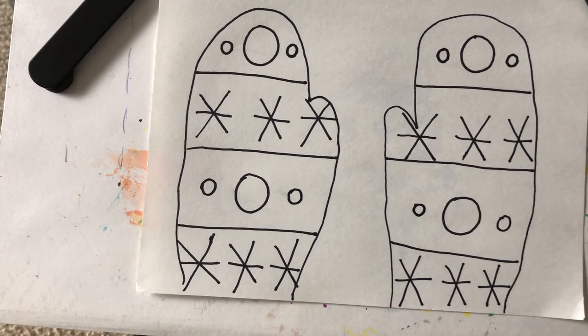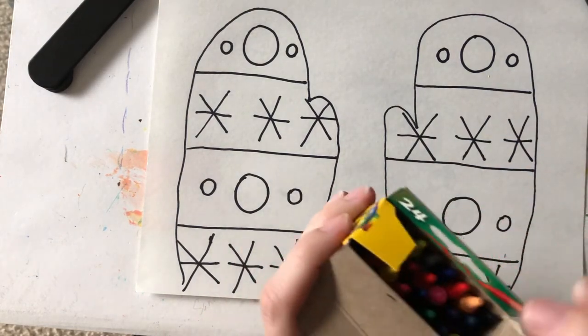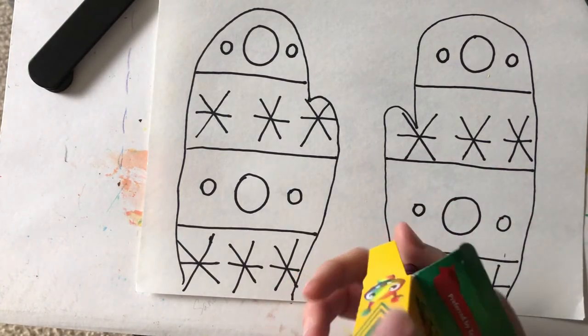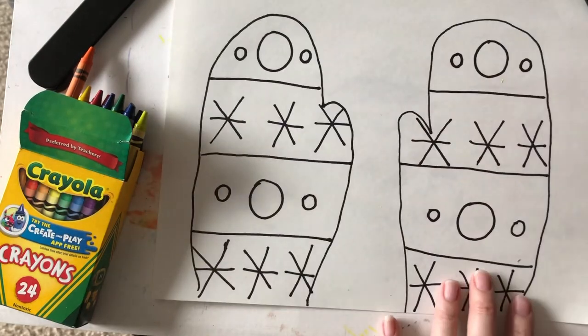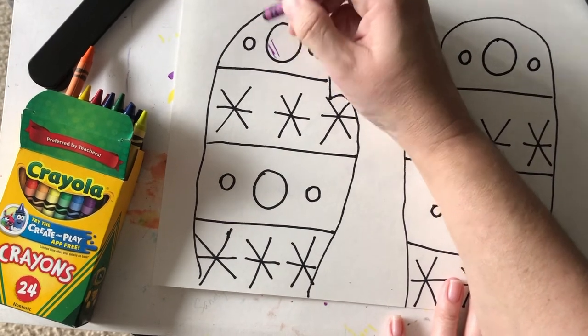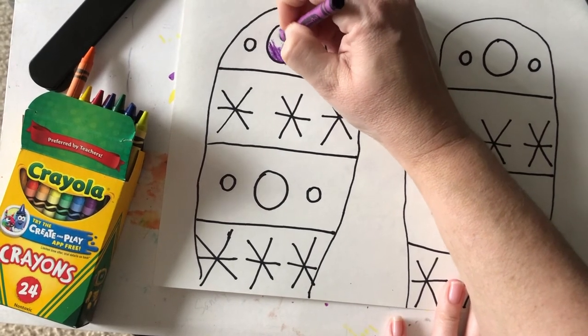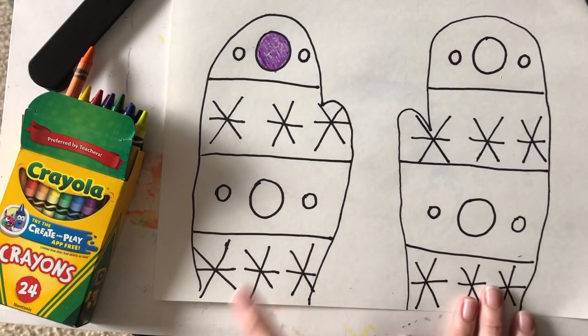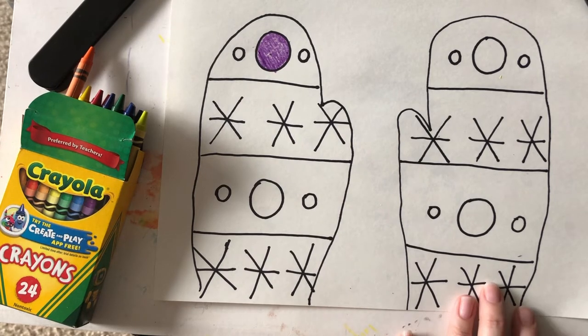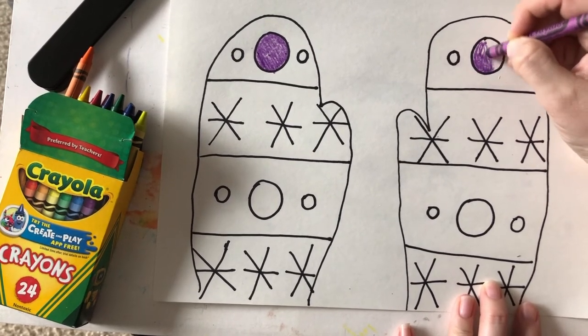All right now I did say we're going to be coloring them in. You can use marker or you can use crayon. Whatever you have will work fine and we want both sides to match. So let's see if I start with purple I'm going to color in my big circle with this pretty purple. Now if I want the other side to match what do I need to do? Yeah you're right I need to color in this big circle purple right?